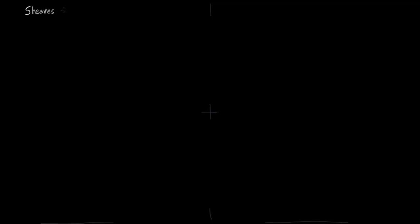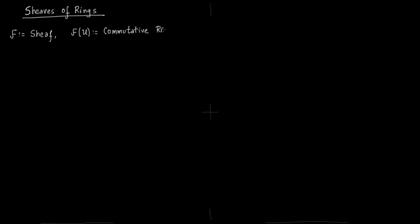On this slide we talk about sheaves of rings. We want to define what a ringed space is. If F is a sheaf, then F of U should be a commutative ring, where U is an open set of some topological space X. We fix a topological space X, define a sheaf F on it. The standard diagram: V is an open set in X, V is a subset of U, and we have a map in the opposite direction — a homomorphism of rings.